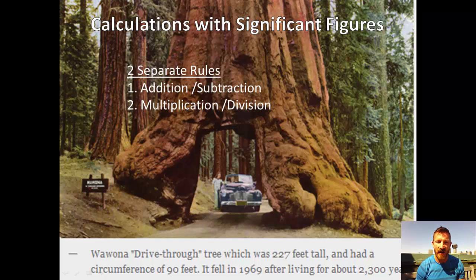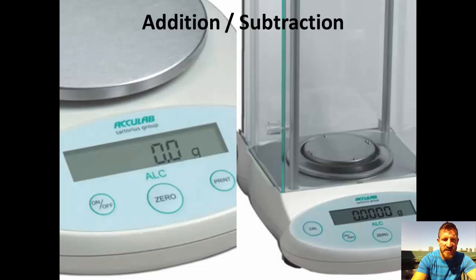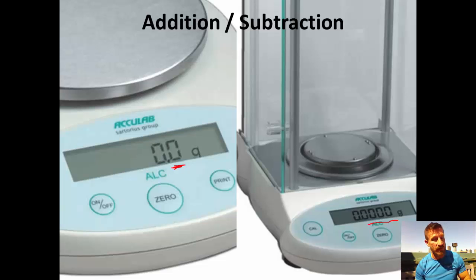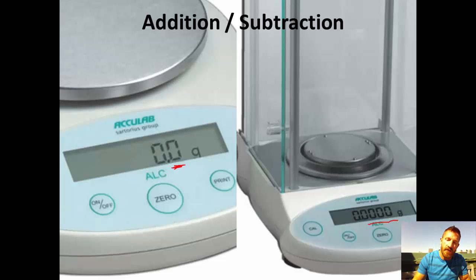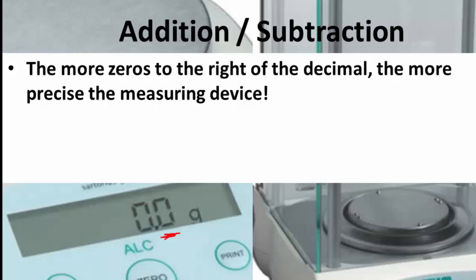We measure all the time. Let's look at the rule for addition and subtraction. You notice we have two different balances here. The balance on the left only measures one place to the right of the decimal. The balance on the right measures four places to the right of the decimal. The one on the right has a lot more significant figures. The way the rule works is the more zeros to the right of the decimal, the more precise a measuring device.